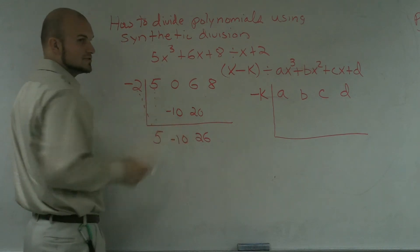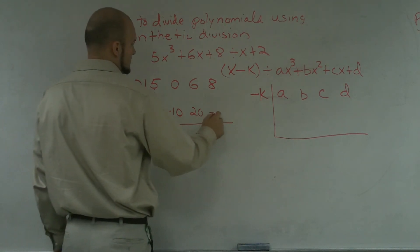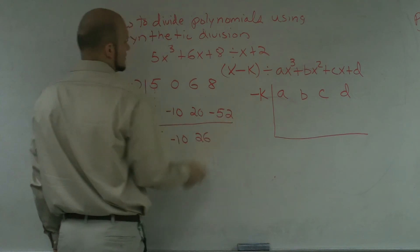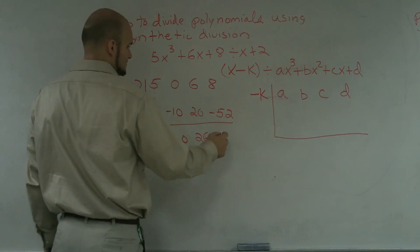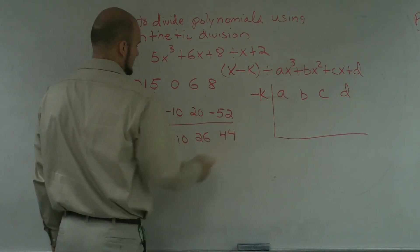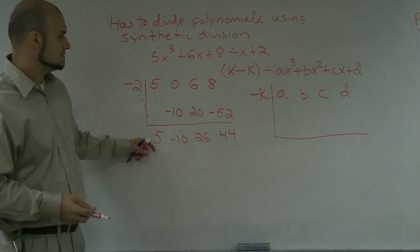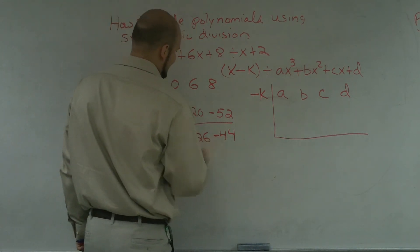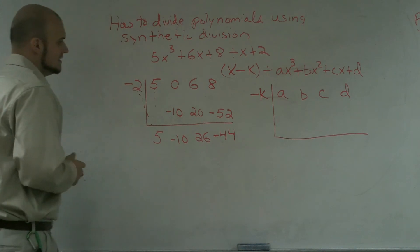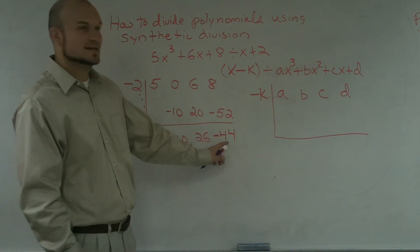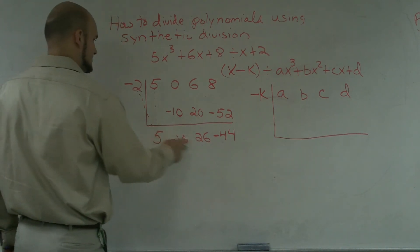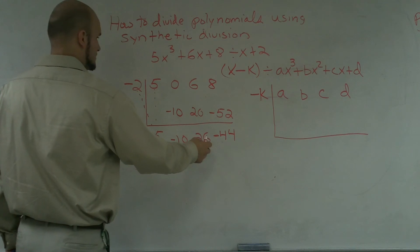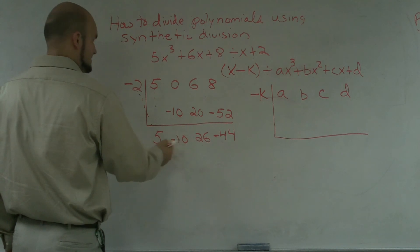Negative 2 times 26 becomes negative 52. 8 plus negative 52 becomes negative 44. So now, negative 44, you guys can see that did not end up being 0. So therefore I have, let's see, this ends up being my D, this would be my C, and this is going to be my B.